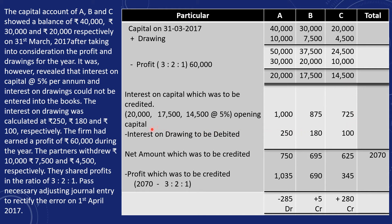Now for drawings, we calculate interest on drawings — which is to be debited: A Rs. 250, B Rs. 180 and C Rs. 100. Net amounts after adjustment: A Rs. 750, B Rs. 695, C Rs. 625. Then distributing profit — A gets Rs. 1,035, B gets Rs. 690 and C gets Rs. 345.